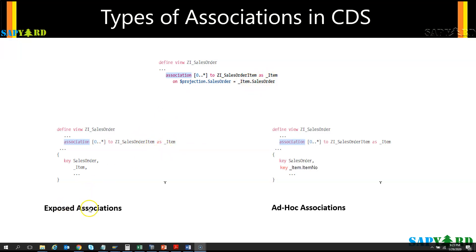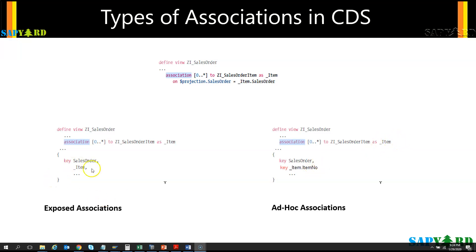At the bottom, you have the exposed association and the ad hoc association. How do you identify them by looking at this SQL or code? If you see here, this association has the name underscore_item, and this underscore_item is used in the projection — meaning the output of the CDS view has an association. It does not use a particular field of the association but exposes the whole association in the projection. On the right-hand side, we have the same association name underscore_item, but here we are using one particular field of that association.